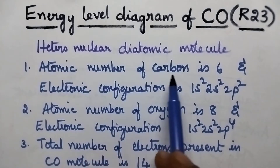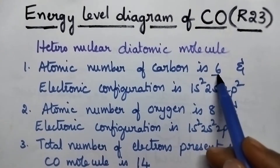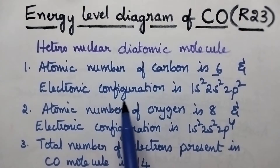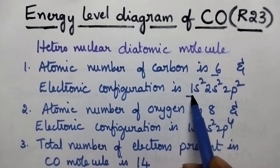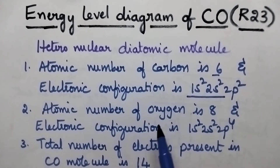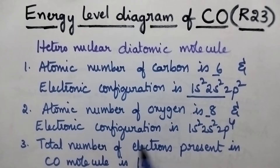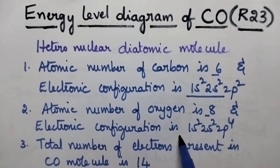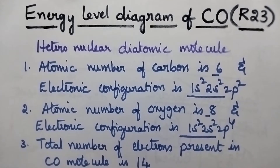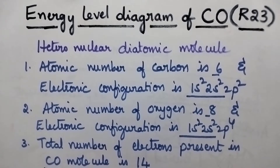The atomic number of carbon is 6 and its electronic configuration is 1s2, 2s2 and 2p2. The atomic number of oxygen atom is 8 and its electronic configuration is 1s2, 2s2 and 2p4. So the total number of electrons present in CO molecule is 14.